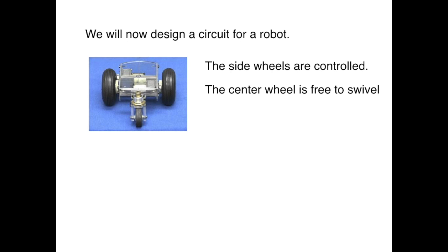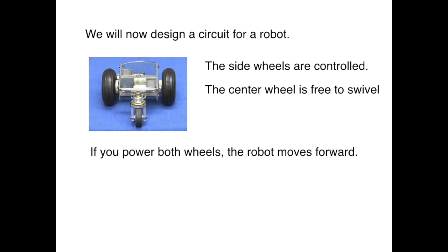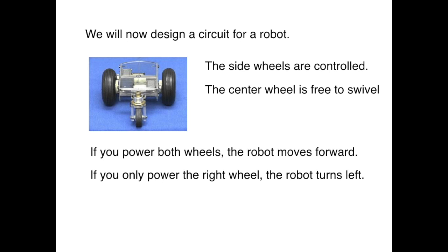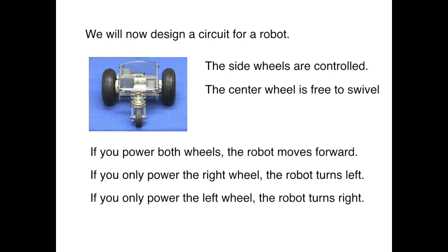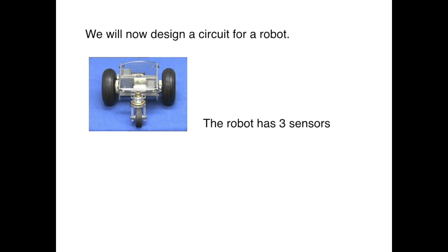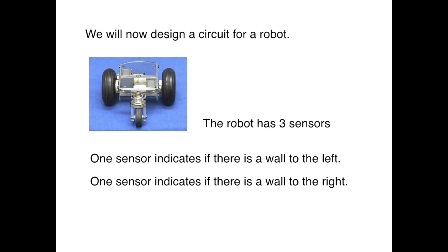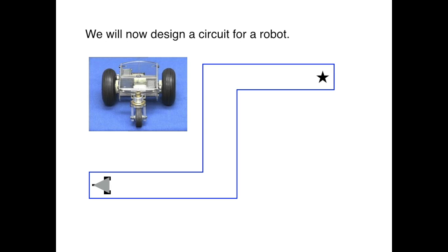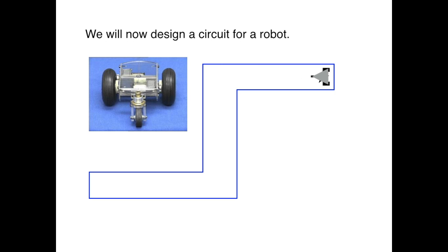We will now design a circuit for a robot. This robot has two powered wheels on the sides and a center wheel free to swivel. If you power both wheels, the robot moves forward. If you power only the right wheel, the robot turns left. If you power only the left wheel, the robot turns right. The robot has three sensors: one indicating if there's a wall to the left, one for a wall to the right, and one for a wall in front. We want the robot to go forward until it hits a wall, then if it sees a wall in front and to the right, turn left; then travel forward until it sees a wall in front and to the left, and turn right; then travel forward again to the finish.